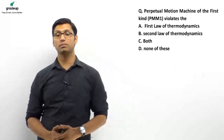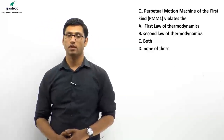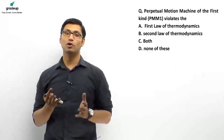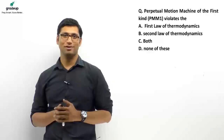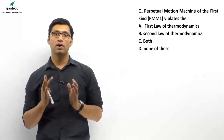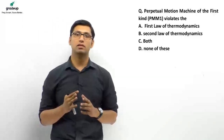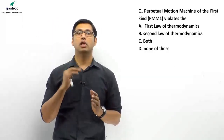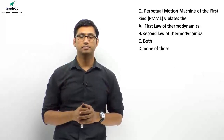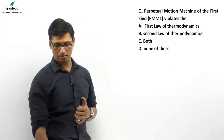Question 3: Perpetual motion machine of the first kind violates (A) first law, (B) second law, (C) both, (D) none. We discussed this in today's lecture — PMM1 violates the first law of thermodynamics. Answer: option A.